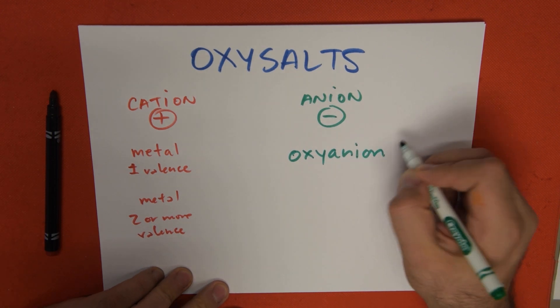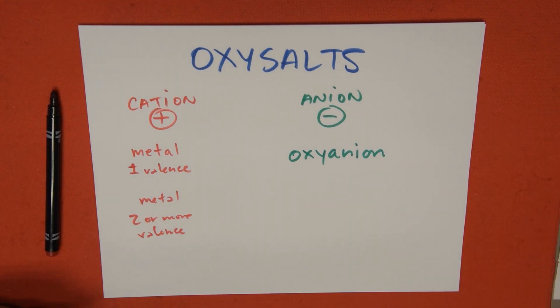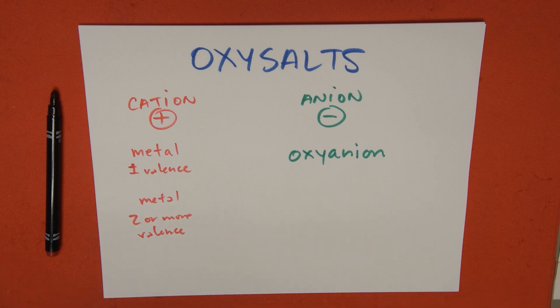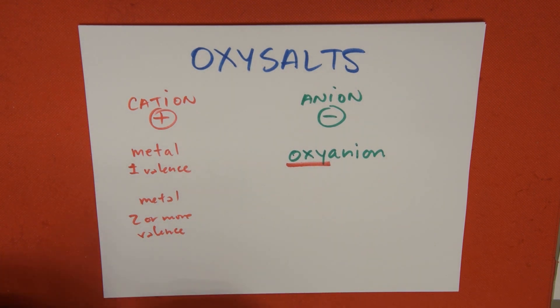What is an oxyanion? An oxyanion is a specific cluster of molecules, it's a polyatomic ion that is made up of several components, and one of those components is oxygen, that's why it's called oxyanion.